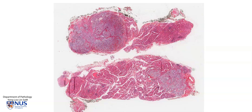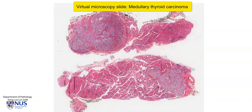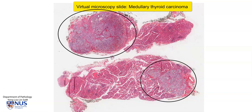Hello, this is a virtual microscopy slide of a thyroid gland showing the presence of a tumor. We can see two slices here and the region of the tumor is here as I am outlining, and on this slice it is here.